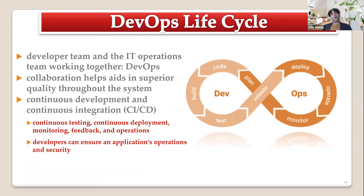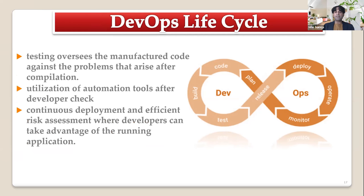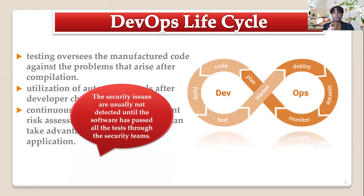The DevOps life cycle, where developer teams and IT operations teams work together, leads to superior quality and continuous deployment. There is monitoring and feedback between operations and developers. However, the problem in DevOps is that security issues are only detected after the software has passed all tests through the security team — meaning security is still only addressed after the fact, not from the design phase.